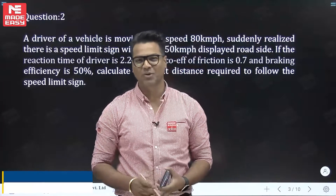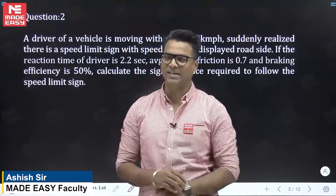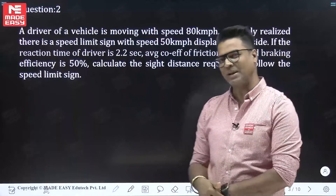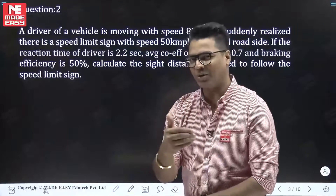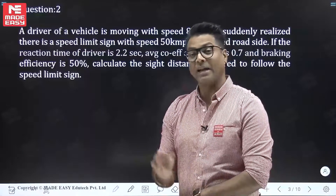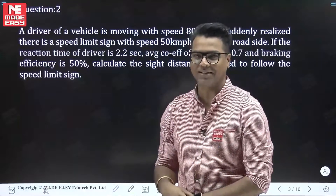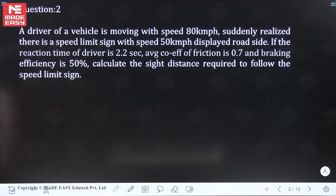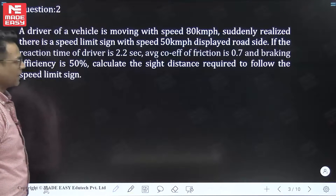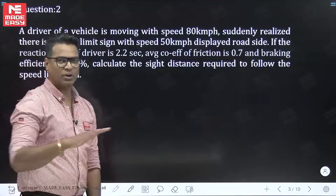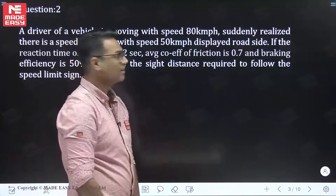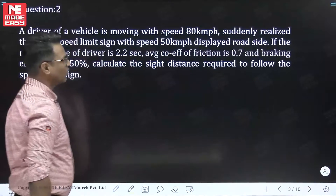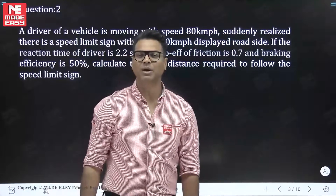Read this question carefully. The data is given in a different way — they are asking about sight distance, but try to understand what exactly they want. A driver is moving with 80 km/h and suddenly realizes there is a speed limit sign board displaying 50 km/h.